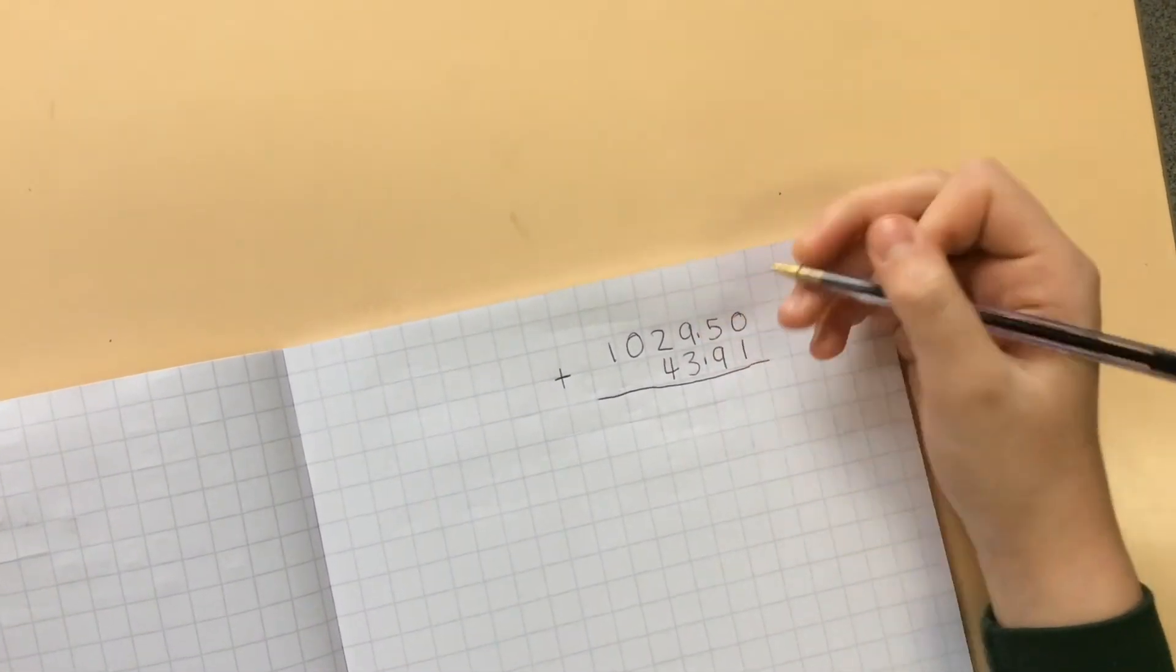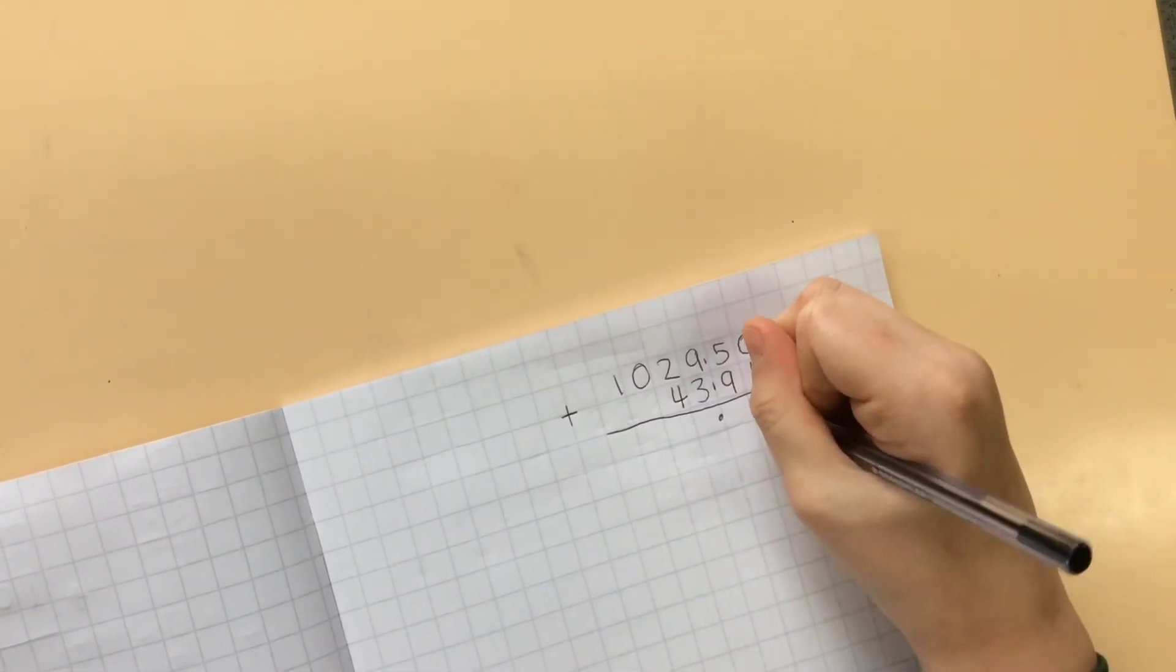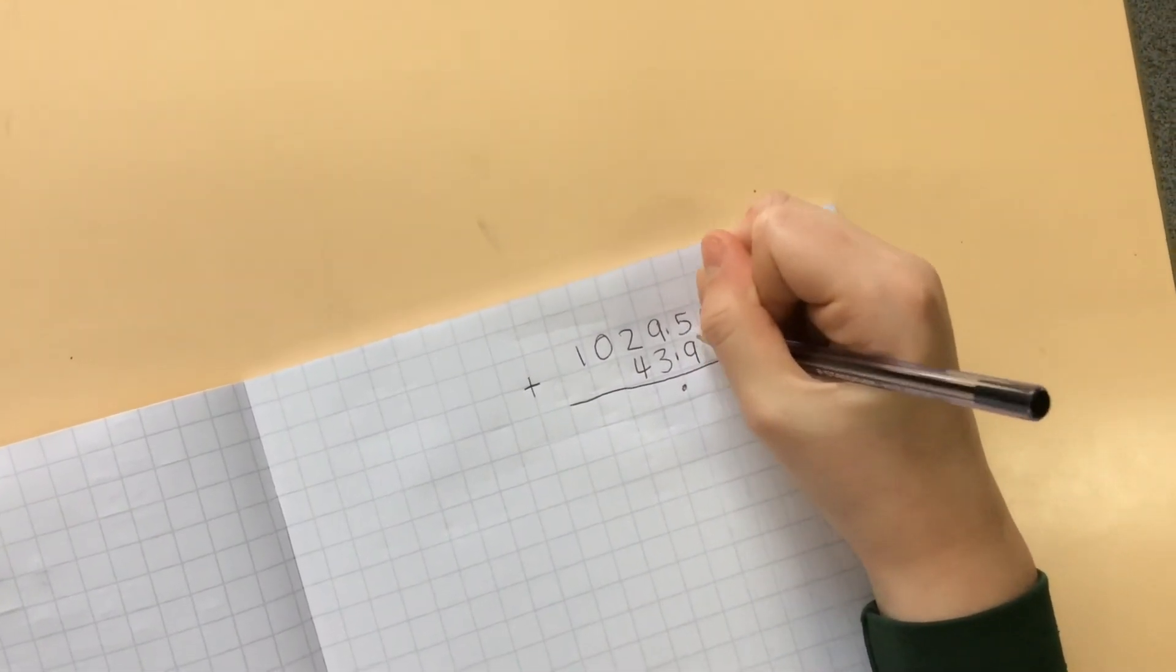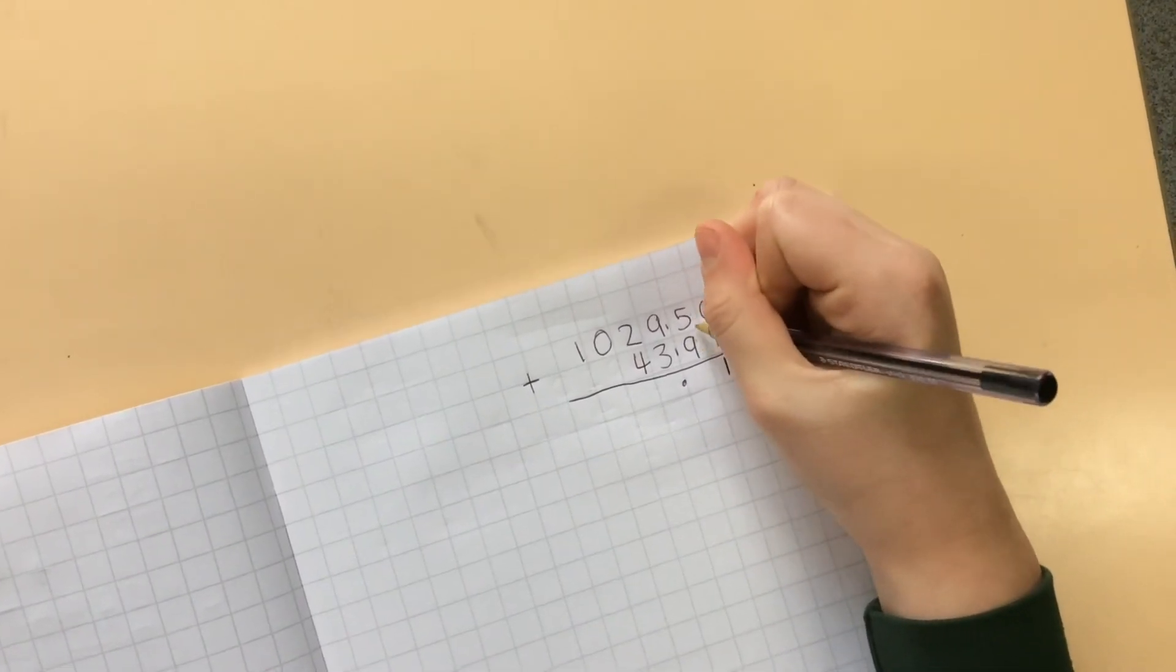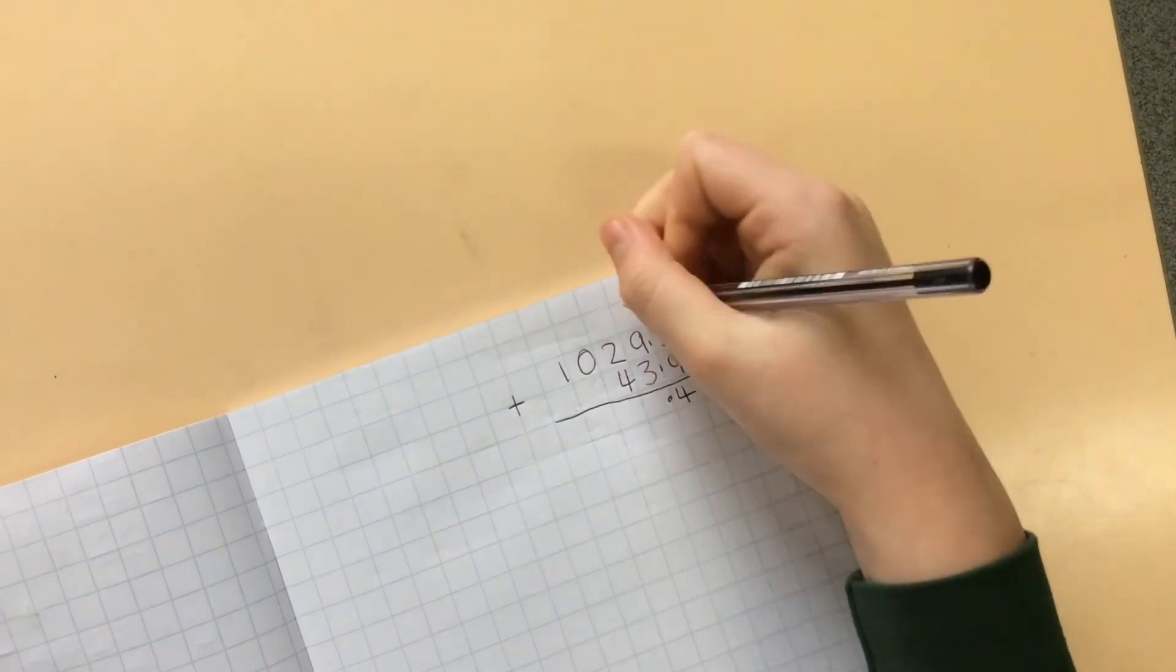Here I have one with decimals in. Always remember to line up your columns. Here you can either do five plus nine or nine plus five. I'm gonna do nine plus five because it's easier to me and that equals fourteen, and then I'm gonna put the one up here because it makes it easier for me to not forget the one.